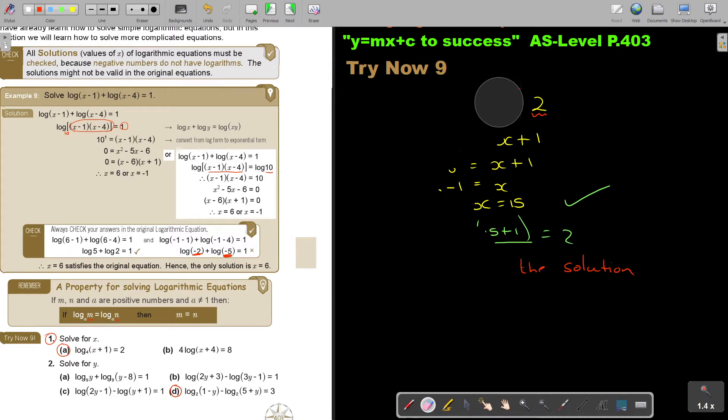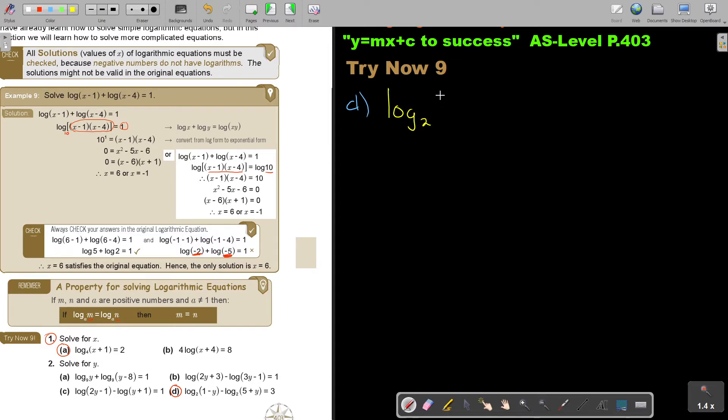Okay. Now, we can go for a bit more challenging one. In this case, we're going to go for number D. Now, we're going to write it down. So, it's log. The base is 2. Do you see? 1 minus Y. Minus log. The base is 2. 5 plus Y. And that's equal to 3.